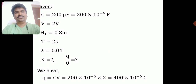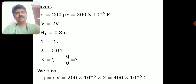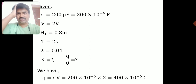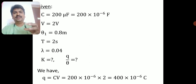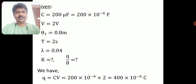Data: capacitance C = 200 × 10⁻⁶ F, potential V = 2 volts, throw θ₁ = 0.8 m, T = 2 s, λ = 0.04. First calculate charge: q = CV = 200 × 10⁻⁶ × 2 = 400 × 10⁻⁶ coulombs = 400 microcoulombs. Then use the ballistic galvanometer formula.